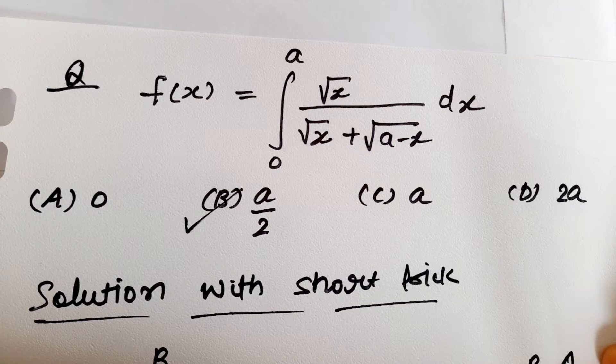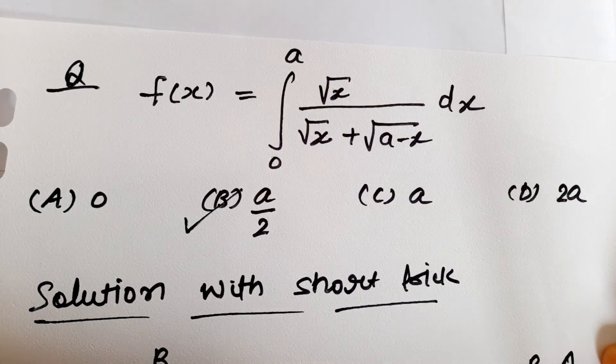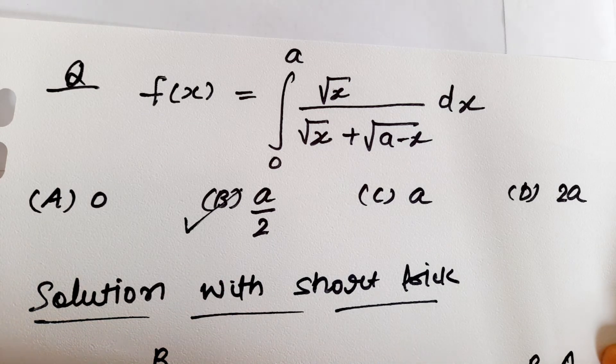So we have f of x is equal to the integral from 0 to a of square root x upon square root x plus square root of a minus x dx. And four options we have: 0, a by 2, a, and 2a.